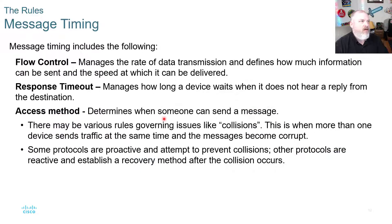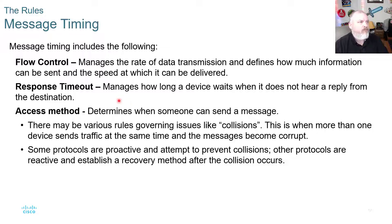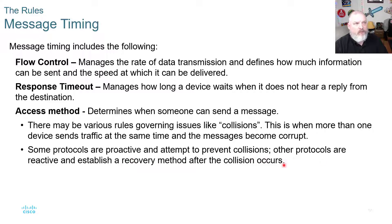That's where we get to timing. Message timing includes flow control, response timeout, and access method. Flow control manages the rate of data transmission and defines how much information can be sent and the speed at which it can be delivered. Response timeout is how long a device waits — if it doesn't hear a reply from the destination, it stops waiting. Access method determines when someone can send a message. There may be rules governing collisions — when more than one device sends traffic at the same time and the message becomes corrupt. Some protocols are proactive and attempt to prevent collisions; others are reactive and establish a recovery method after the collision occurs.